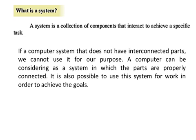Examples include computers, automated teller machines, fingerprint machines, robots, QR code systems, and smart devices. A computer can be considered as a system in which parts are properly connected. If a computer system does not have interconnected parts, we cannot use it for our purpose. It is possible to use this system to achieve goals.